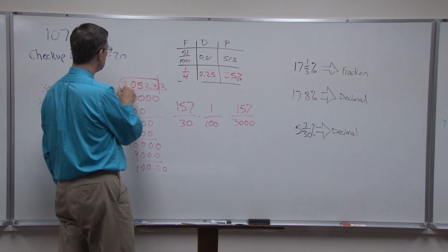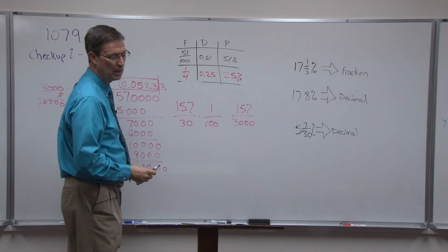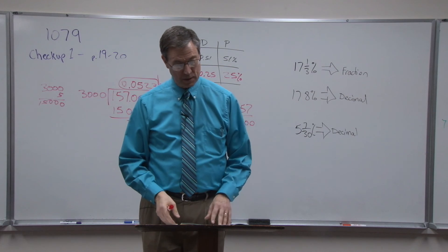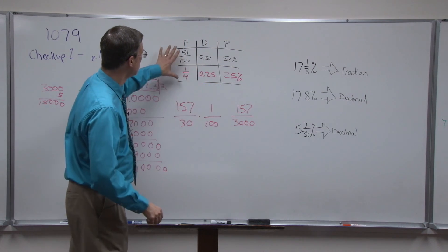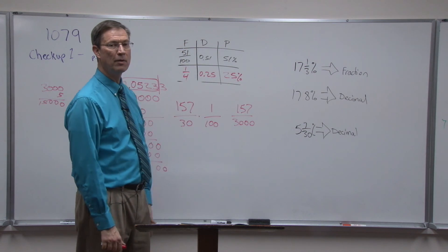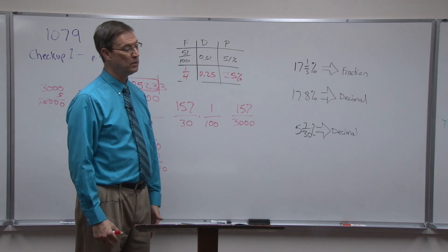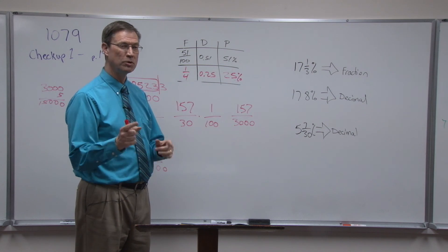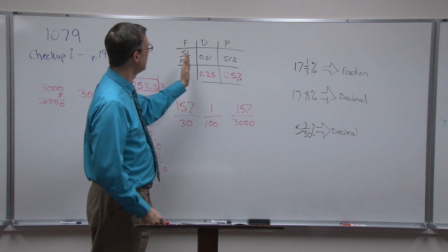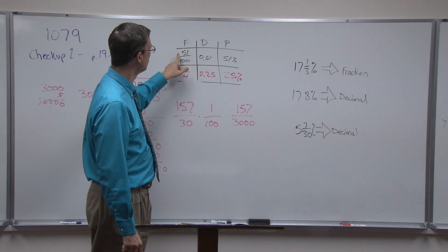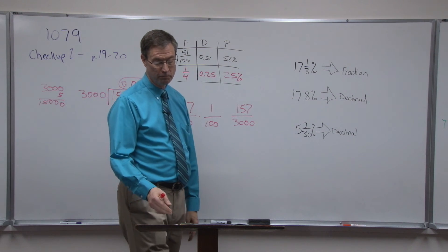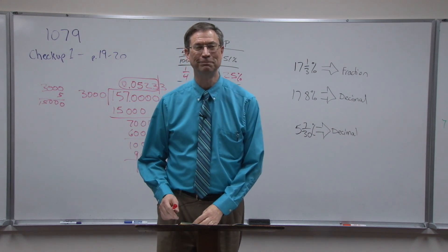I hope this helps. I'd suggest writing these reference numbers on a 3×5 card and keeping it with you while doing the checkup, to remember which steps to do in what order: how many decimal places to move, and when to put something over 100. Good luck on the checkup!